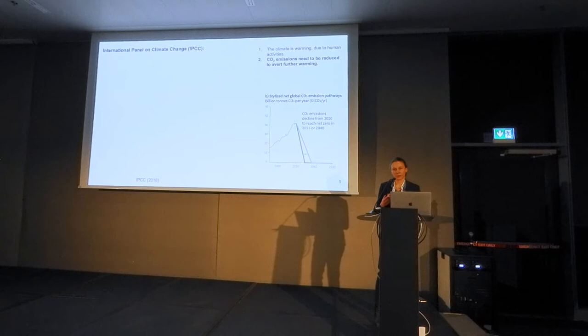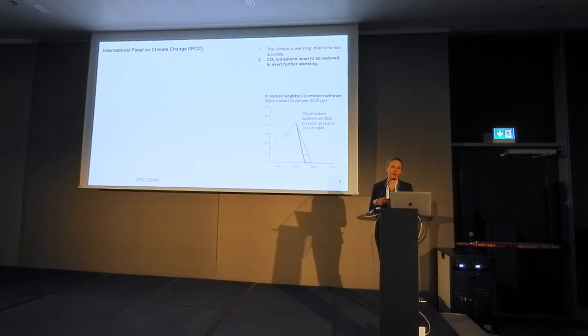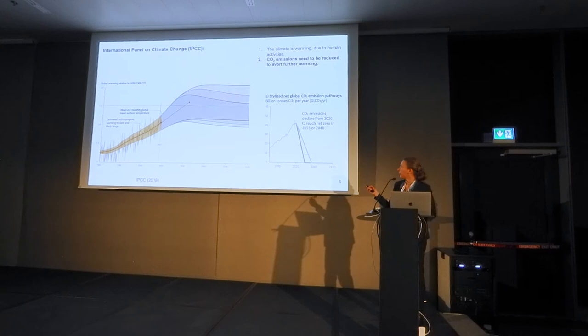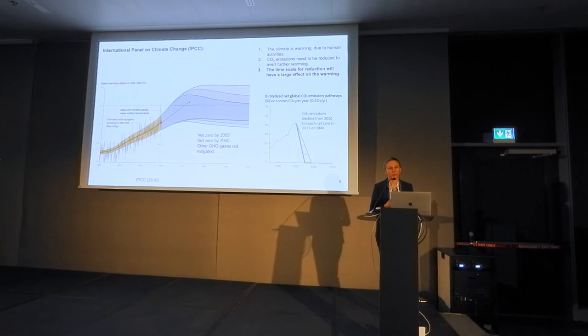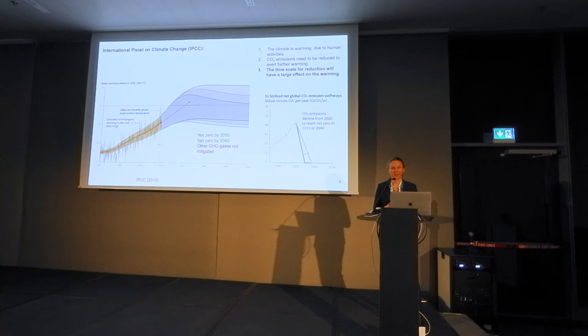The next point is that CO2 emissions need to be reduced to avert further warming. This plot shows the global CO2 emissions since 1970, along with two decarbonization scenarios to reach global net zero carbon emissions, both corresponding to roughly 1.5 degrees of warming. The faster we reduce greenhouse gas emissions, the more likely we are to stay within 1.5 degrees, which is necessary to avoid catastrophic climate changes. We also need to reduce other greenhouse gases, for example methane.